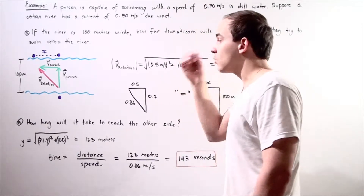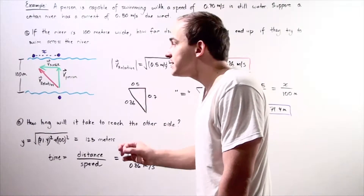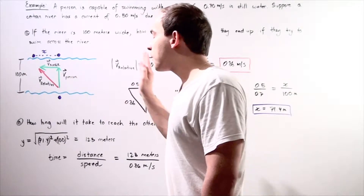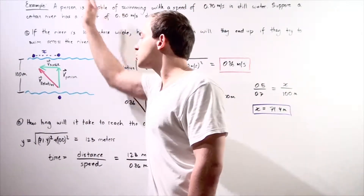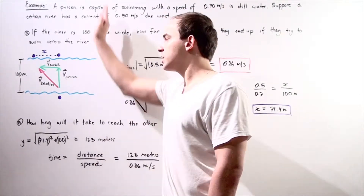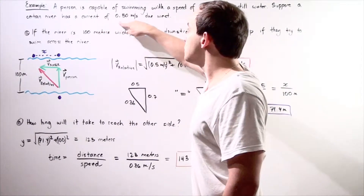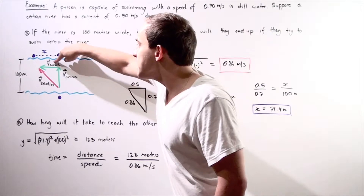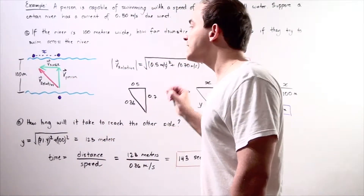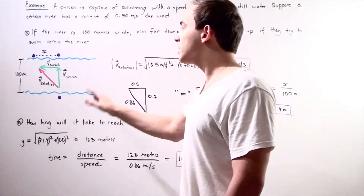To begin, let's draw our velocity diagram. We want to figure out what the relative velocity of the swimmer is. Notice that the person is trying to swim directly upward, so we have our velocity of the person pointing upward along our Y axis. Likewise, the river has a current of 0.5 meters per second pointing along the X axis in the negative direction. We want to find the magnitude of our relative velocity of the swimmer.